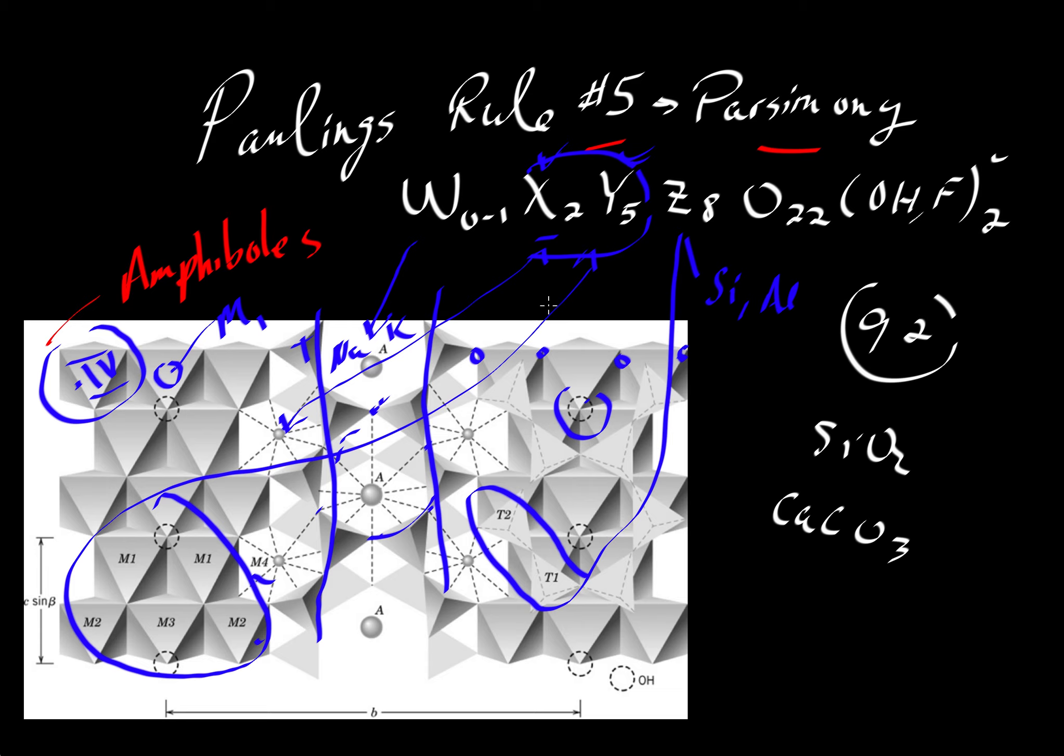The bottom line is all of that very messy chemistry can be referred to by this simple formula. So we're going to take 60, 70, 80 possible elements and we can think of them as a small number of constituents, as an M1 constituent or an M2 constituent, or in other words, from the chemistry side, we could talk about a W constituent.